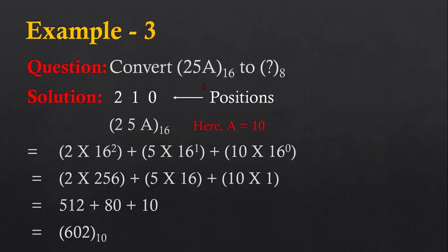One more example: here I am going to convert a hexadecimal number into octal. First I am going to convert the hexadecimal number into decimal, and then that decimal number will be converted into octal. The number is 25A — three digits are available. The position of A is 0, position of 5 is 1, and position of 2 is 2. A will be converted to 10, because we can't use A for any calculation, so its representation is 10.